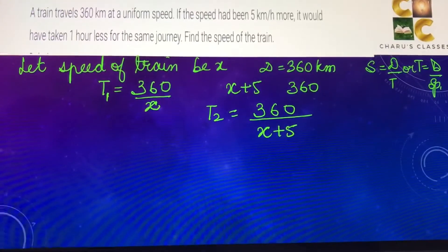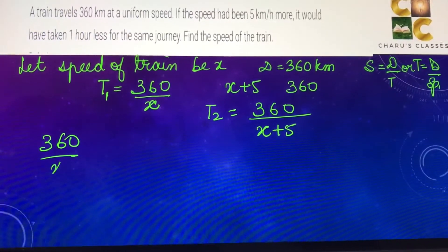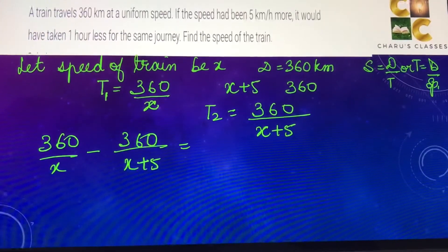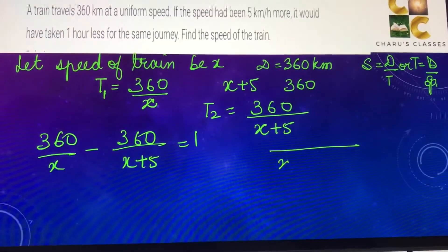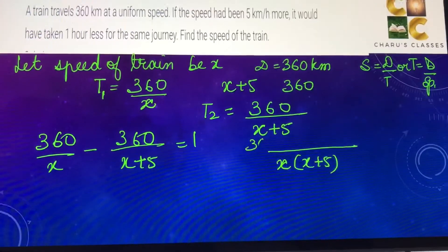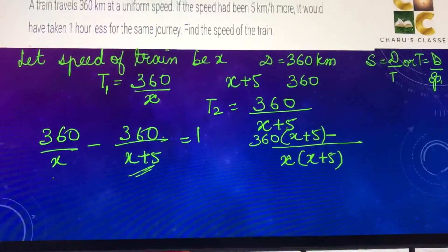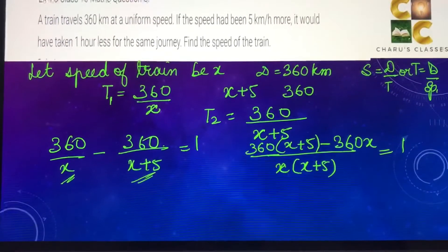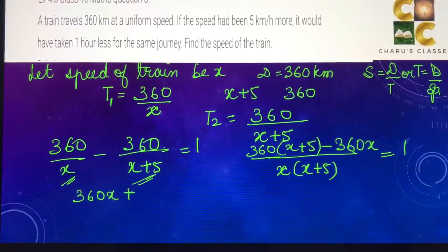So in this case, we can write 360/x - 360/(x + 5) = 1. In the denominator, we have x(x + 5). Cross multiplying, 360 will multiply with x + 5, minus 360 will multiply with x.